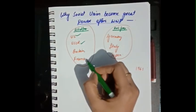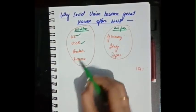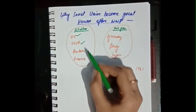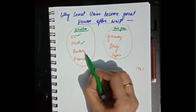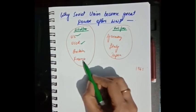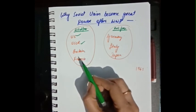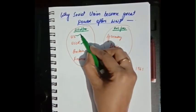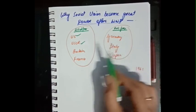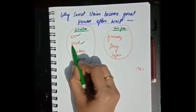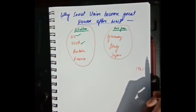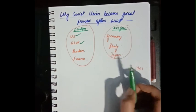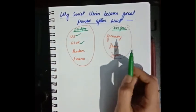Though Britain and France were winners of World War II, they could not become superpowers like USA and USSR, because during the war Britain and France suffered so much financial loss that they could not become as powerful. Finally, only USA and USSR emerged as the two superpowers of the world.